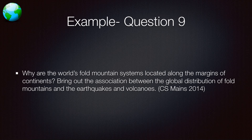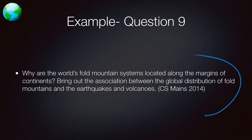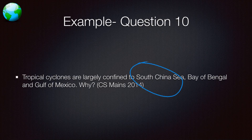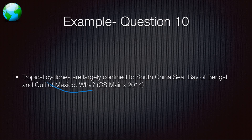Why are the world's fold mountain systems located along the margins of continents? This is a very specific geographical question that any good geography student should be able to answer well. Another question asks about the association between the global distribution of fold mountains, earthquakes, and volcanoes — there is a very strong association between them. Also, tropical cyclones are largely confined to the South China Sea, Bay of Bengal, and Gulf of Mexico — you need to explain why they occur in these tropical regions and not in other tropical areas.